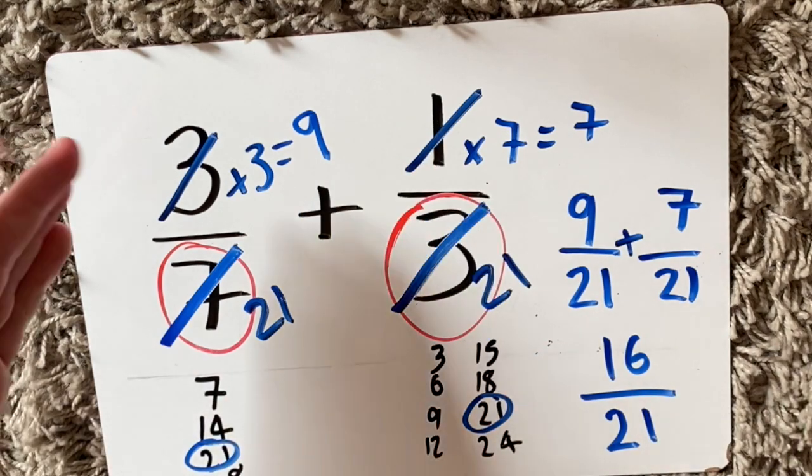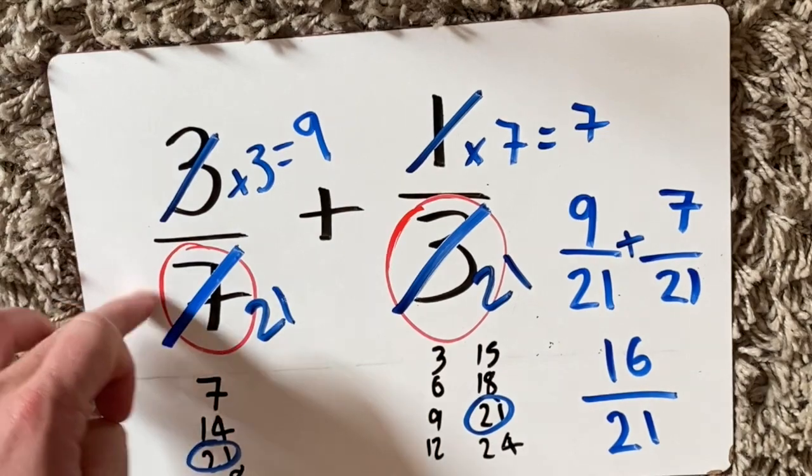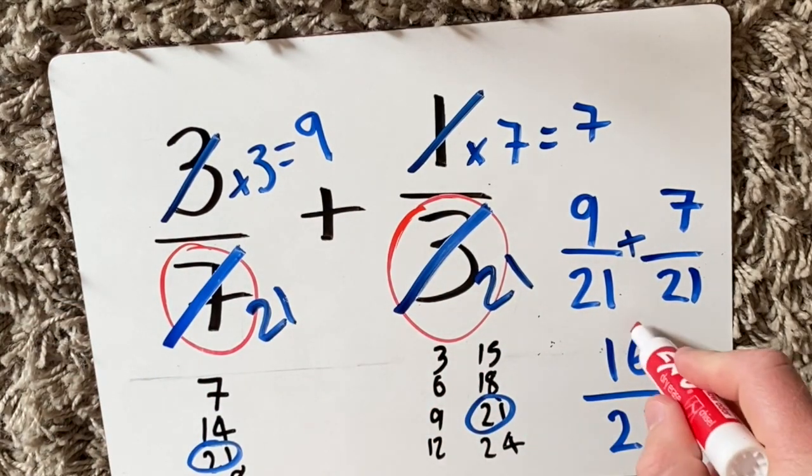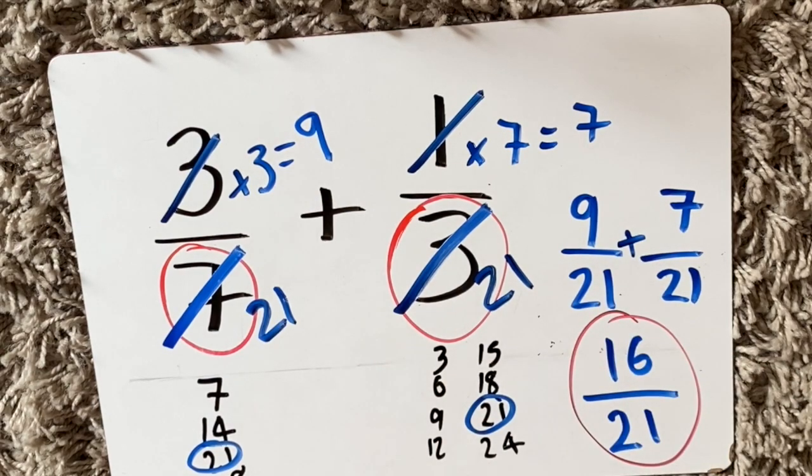So I've just done three sevenths plus one third, and the answer is sixteen twenty-firsts.